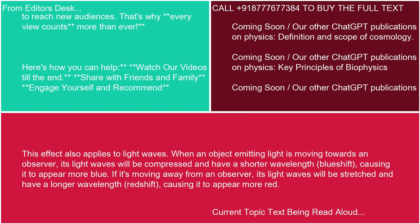This effect also applies to light waves. When an object emitting light is moving towards an observer, its light waves will be compressed and have a shorter wavelength — blue shift — causing it to appear more blue. If it's moving away from an observer, its light waves will be stretched and have a longer wavelength — red shift — causing it to appear more red.